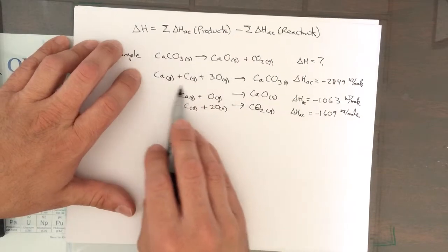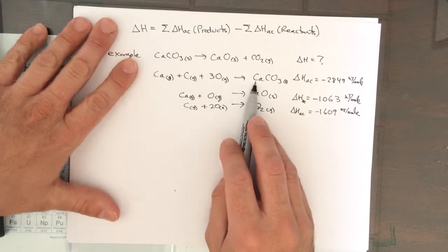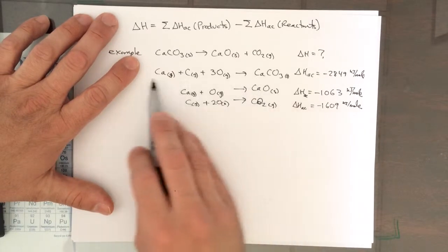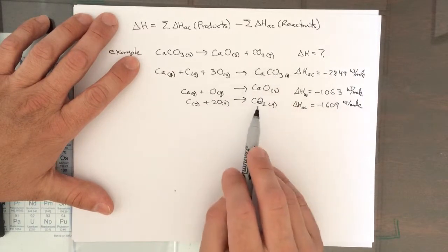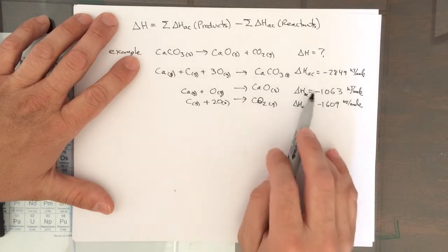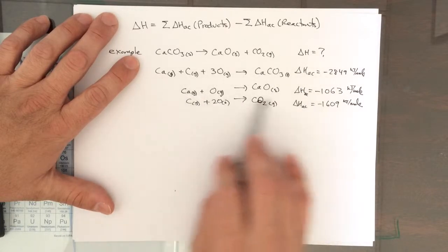We take the elements as atoms in the gas phase and we combine them. Atom combination. We combine the atoms to get the compounds of interest. You can look these numbers up and these are the reactions that correspond to them.